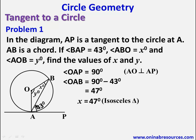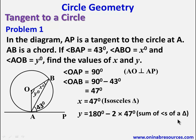From here we can get the value of Y. Since X plus X — that is 2X plus Y — gives 180 degrees, Y will be 180 minus 2 times 47, using the sum of angles of a triangle. That gives us Y equals 86 degrees. We are done with problem 1.